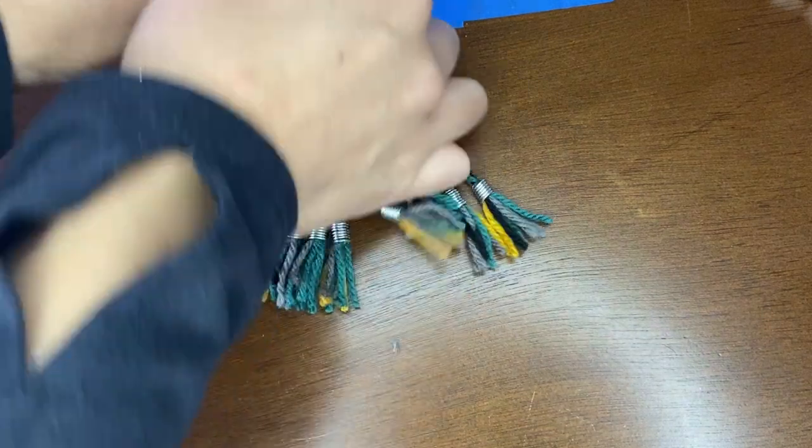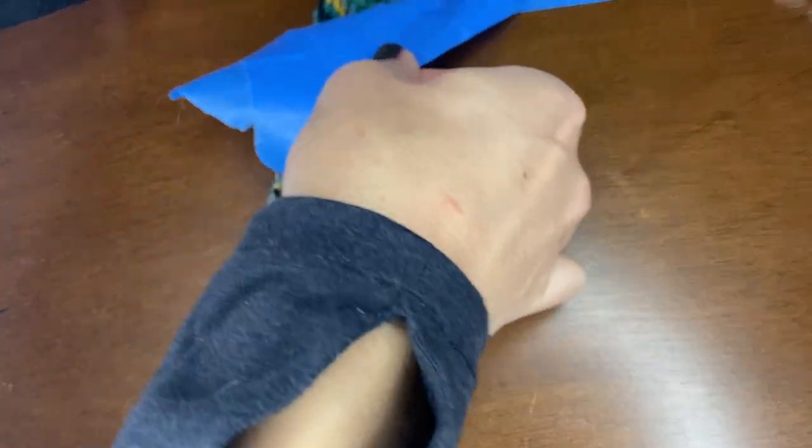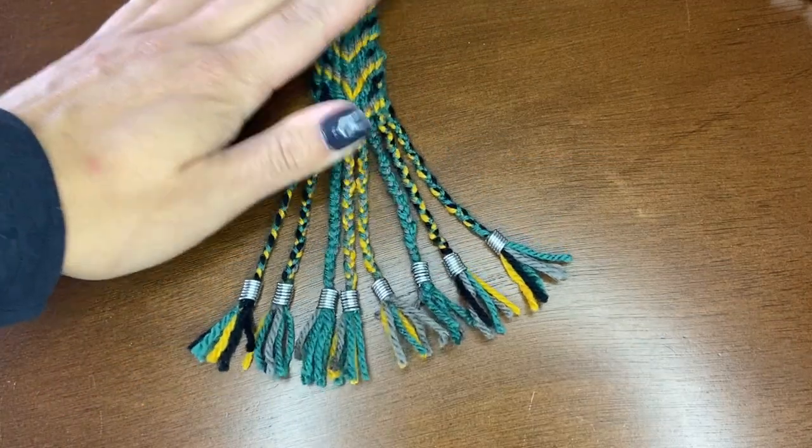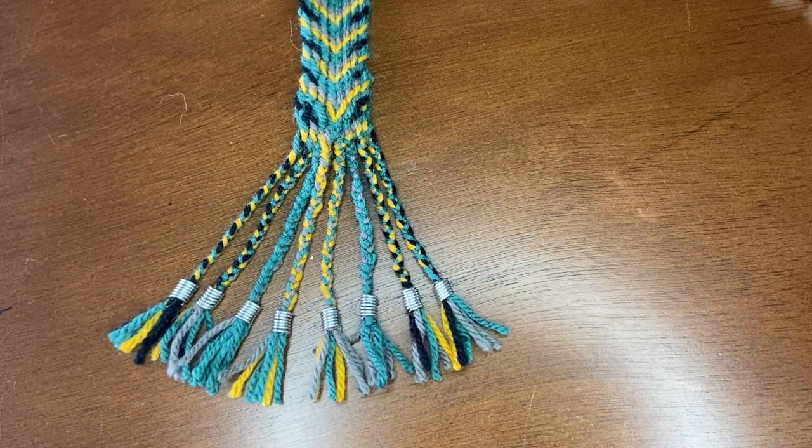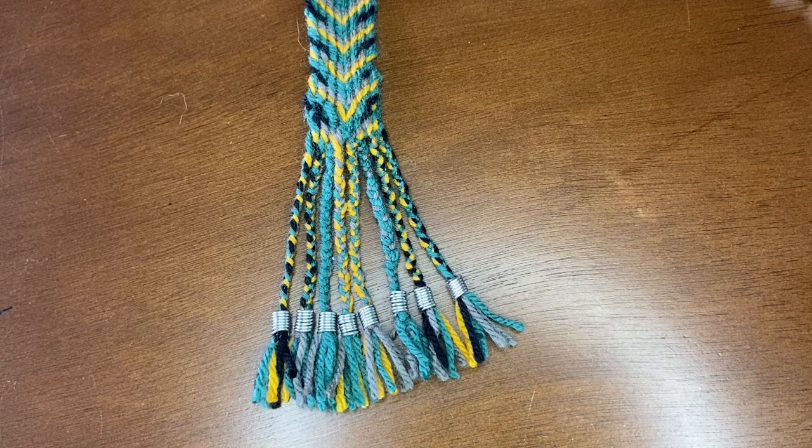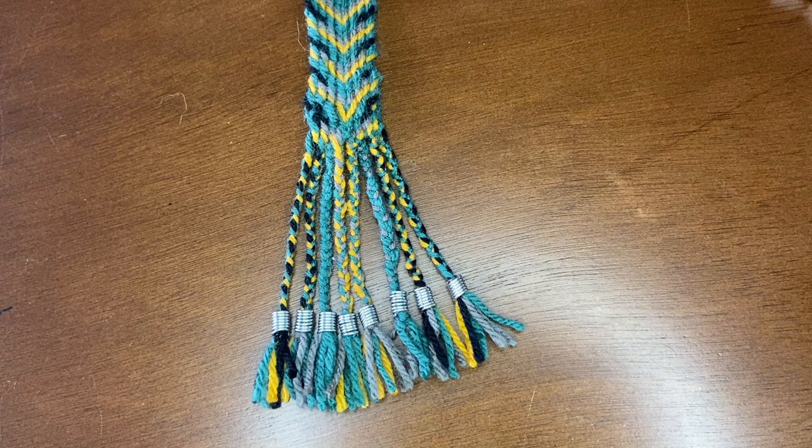Then unfortunately my footage got corrupted, but when I reached the desired length I looped the end of the weft between two previous layers I had created, and divided the yarns into almost equal amounts. I then braided them and made these aglets from crafting wire.